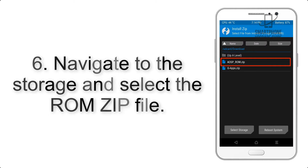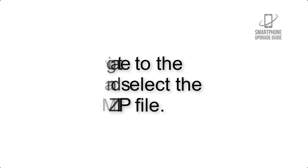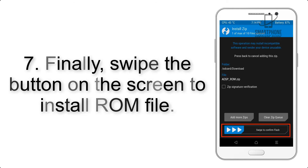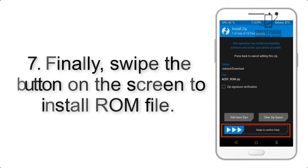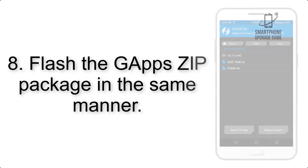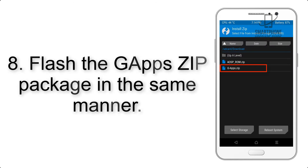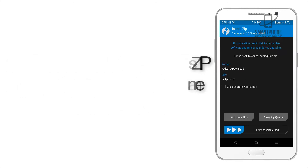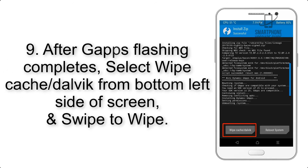Step 6: Navigate to the storage and select the ROM zip file. Step 7: Finally, swipe the button on the screen to install the ROM file. Step 8: Flash the gapps zip package in the same manner.